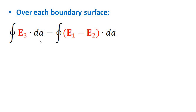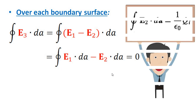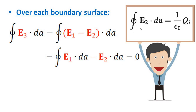The closed surface integral of E3 dot da equals the closed surface integral of (E1 minus E2) dot da, which equals the closed surface integral of E1 dot da minus E2 dot da. This equals 0, because we already know that the closed surface integral of E dot da equals 1 over epsilon-zero times Qi, and the charges are the same.